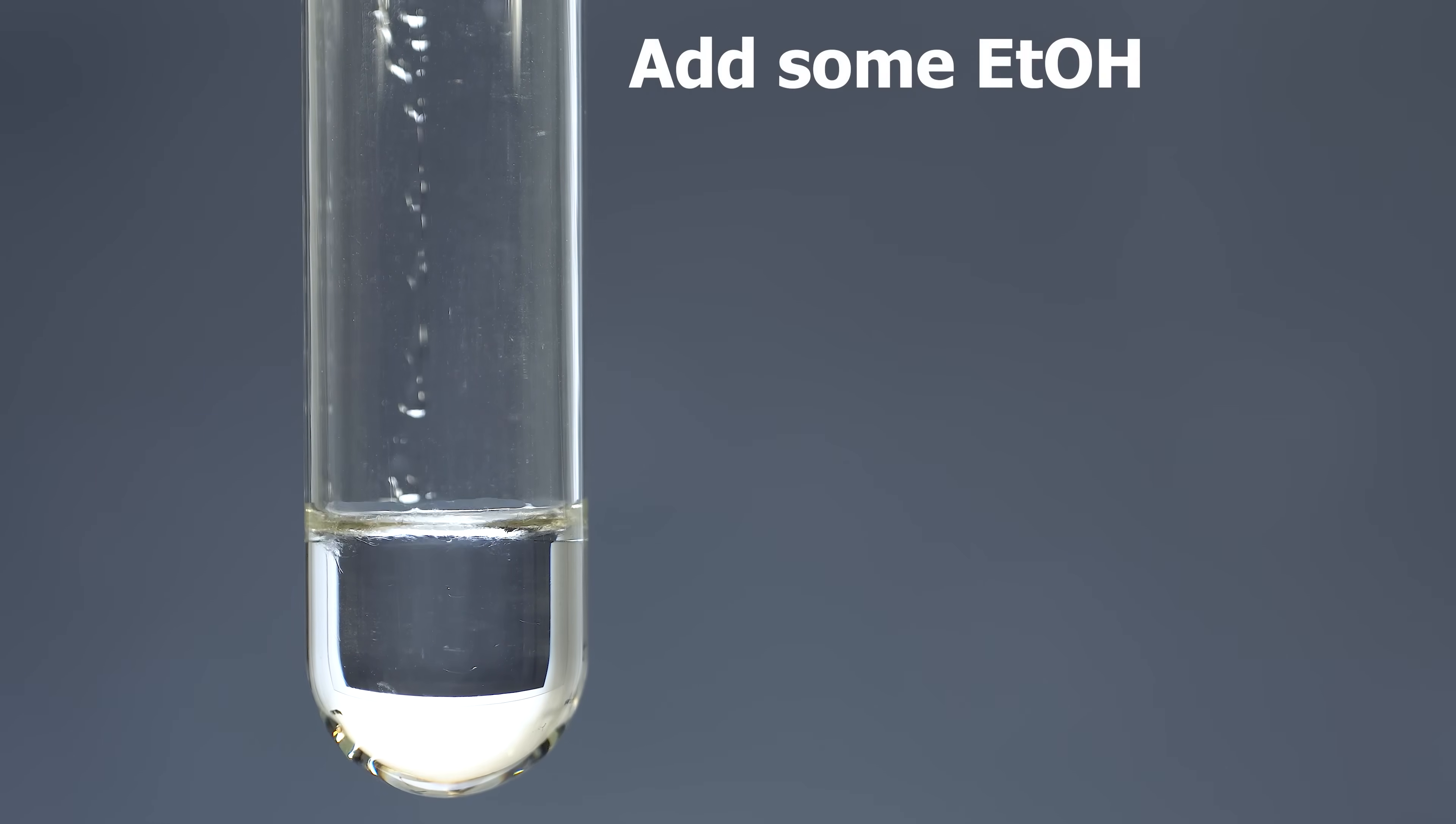To perform this experiment, we add ethanol into a test tube with concentrated sulfuric acid, and we do it rather slowly and gently. Otherwise, alcohol might mix itself with sulfuric acid, and the experiment fails.